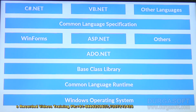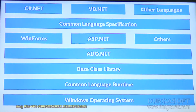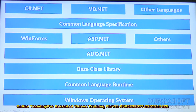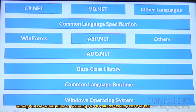This .NET Framework architecture diagram explains the various components of .NET and how they are arranged. In earlier videos we have seen several things like Common Language Runtime, the Framework Class Library (FCL), and Common Language Specification. At the bottom level we have the Windows operating system.